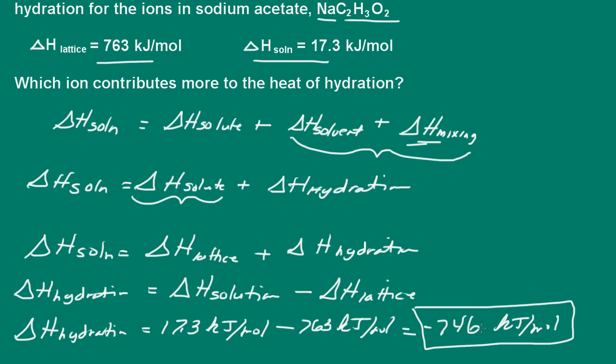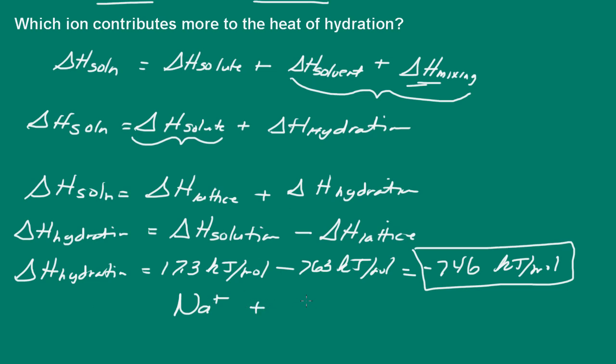So now we're asked which ion contributes more to the heat of hydration. Well, remember, we have sodium ions plus acetate ions. The sodium ion is much smaller than the acetate ion. Therefore, the sodium ion is going to contribute more to the heat of hydration because of its smaller size. Remember, the smaller the ion, the larger the charge density.